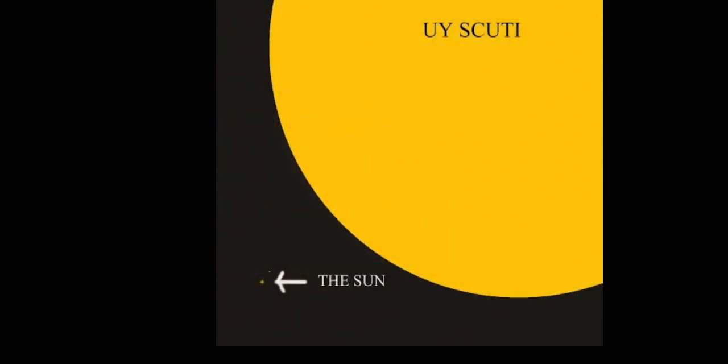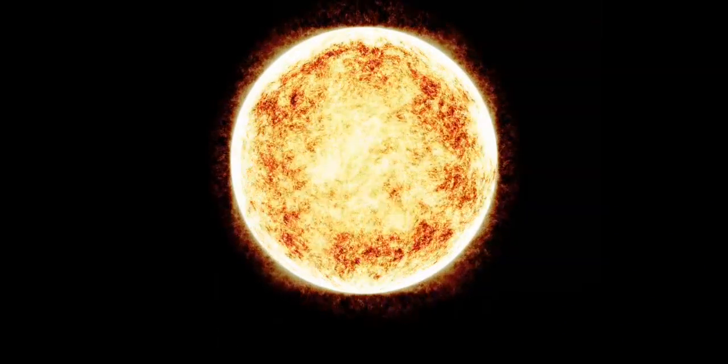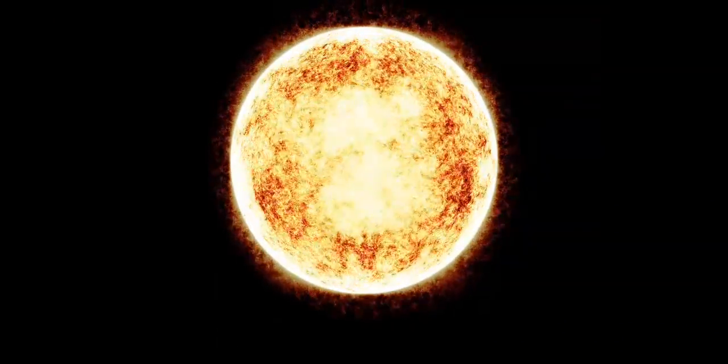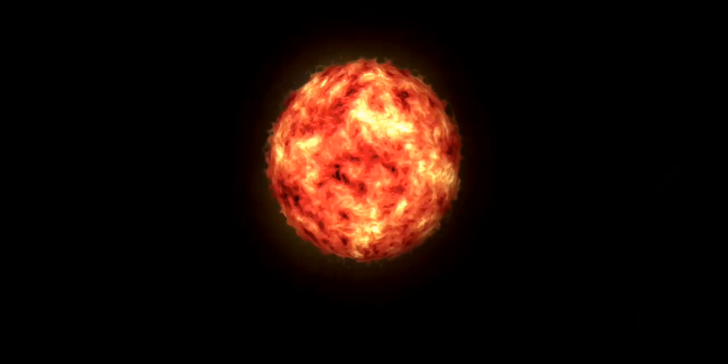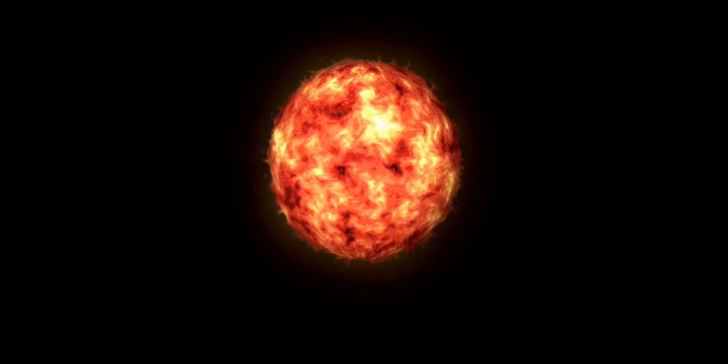To visualize how big UY Scuti is, you can look at its radius in comparison to the Sun, which has a radius of 695,510 kilometers, while the red giant UY Scuti has a radius of 1.1883 billion kilometers. So we can say UY Scuti is huge.